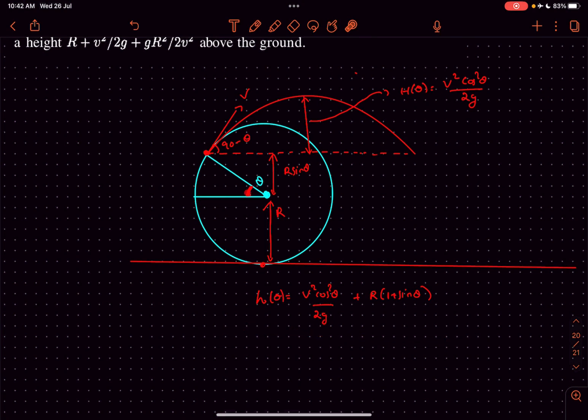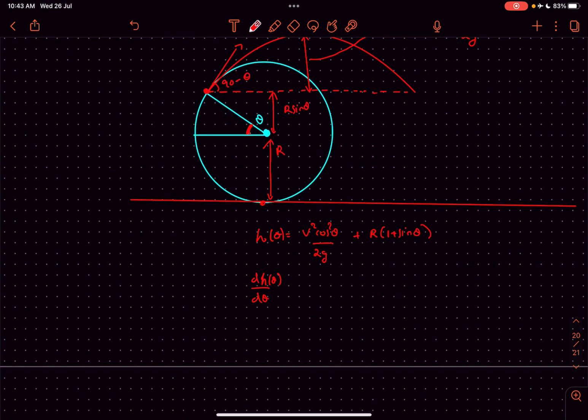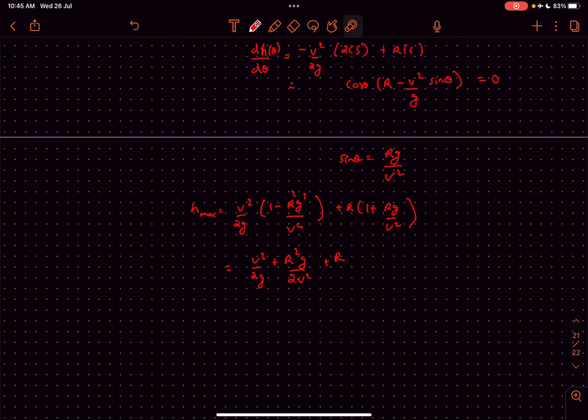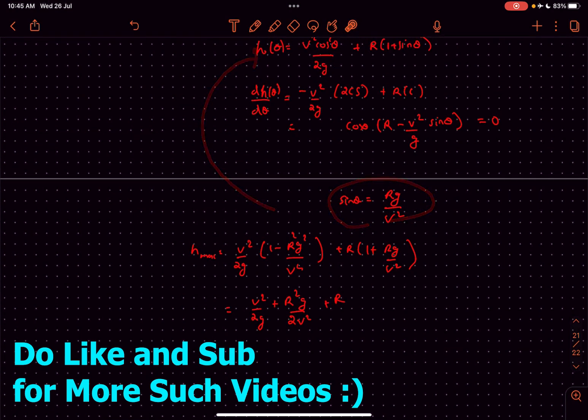Now, as we have to find the maximum of this function, we'll just differentiate it with respect to theta and set this to zero. So we'll get the value of sin θ. Once we substitute the value of sin θ back into our height expression, we'll get the value of h_max as this particular value.